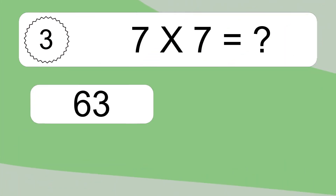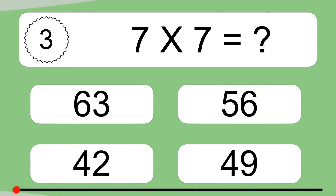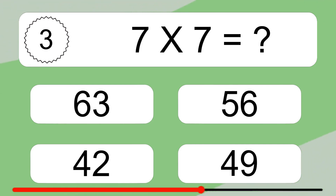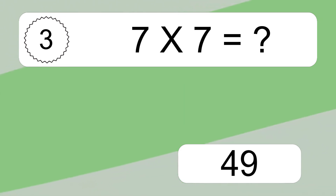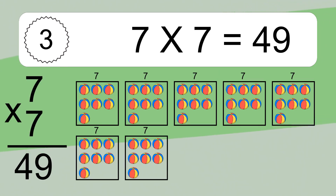7 times 7 equals what? 7 times 7 equals 49.